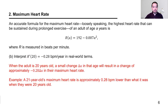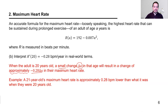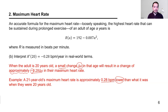When the adult is 20 years old, a small change delta A in age results in a change of approximately negative 0.28 times delta A. For example, a 20-year-old aging one year to 21: delta A equals 1, so the change is negative 0.28. The 21-year-old's maximum heart rate is approximately 0.28 BPM lower than when they were 20.